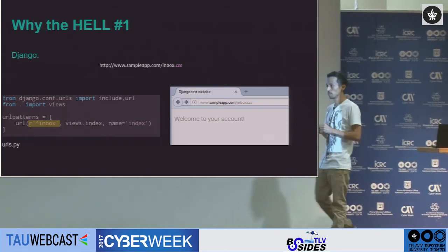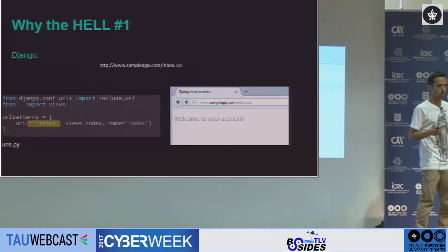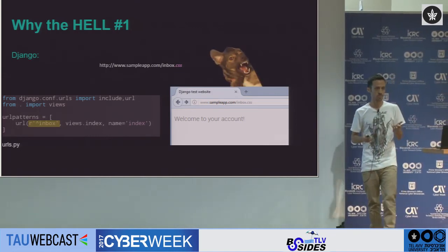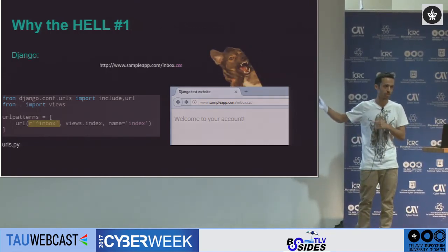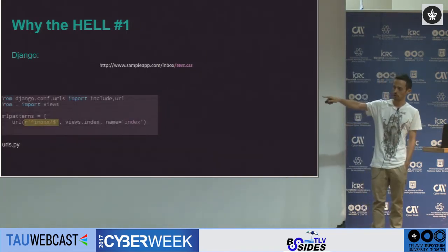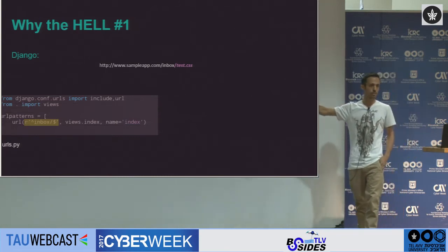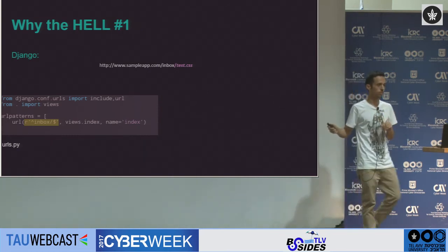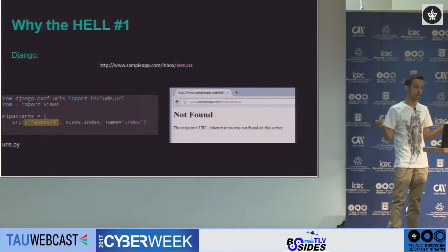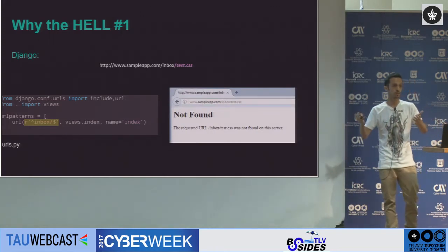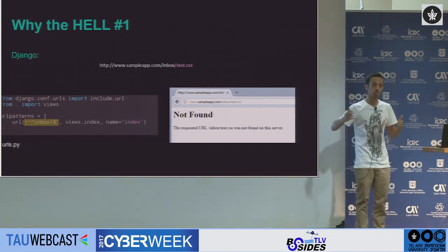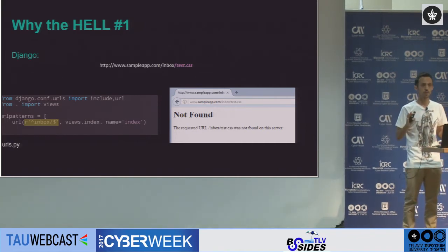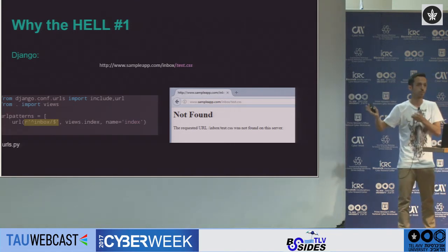To fix this Django vulnerability, we just need to add one character to the regex — the dollar sign. By adding the dollar sign, the regex looks for a URI that begins with inbox, then a trailing slash, and the URI must end there. So accessing /inbox/test.css will return a 404 error, because although the URI starts with inbox and has a trailing slash, it doesn't end there — no regex match. Problem solved with just one character.